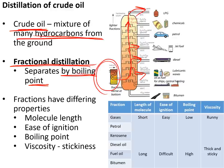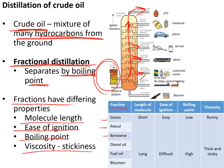Each different boiling point range is called a fraction, and each fraction has a different molecule length, ease of ignition, boiling point, and viscosity. The main fractions are gases (used for cooking and heating), petrol (fuel for cars), kerosene (aeroplane fuel), diesel oil (large vehicles), fuel oil (ships), and bitumen (road surfacing).